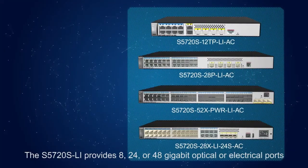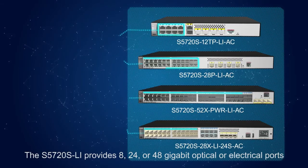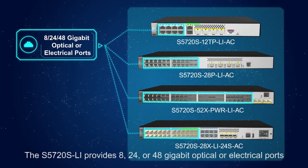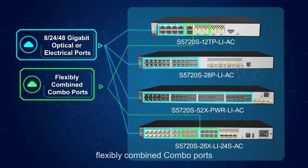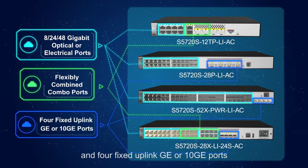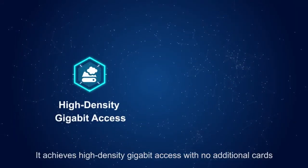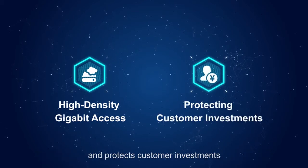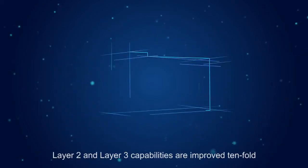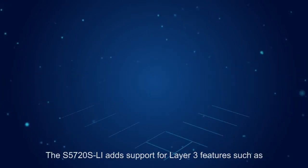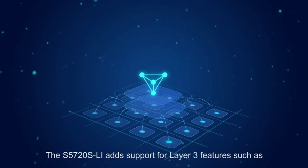The S5720S-LI provides 24 or 48 gigabit optical or electrical ports, flexibly combined combo ports, and four fixed uplink GE or 10GE ports. It achieves high-density gigabit access with no additional cards and protects customer investments.